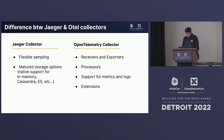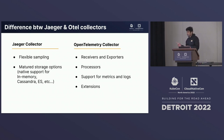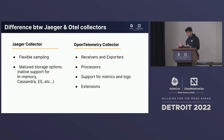Let's understand the differences between the Jaeger and OpenTelemetry collector. The Jaeger Collector has more flexible sampling — it has sampling processors, and the adaptive sampling released in Jaeger 1.26 is available in the Jaeger collector. The Jaeger Collector has built-in storage options: Cassandra, Elasticsearch, or a gRPC-based storage plugin. The OpenTelemetry collector uses receivers, exporters, and processors to build data pipelines, routing data from different sources to different destinations.